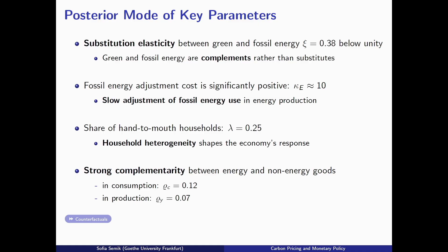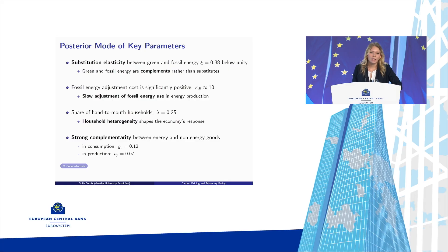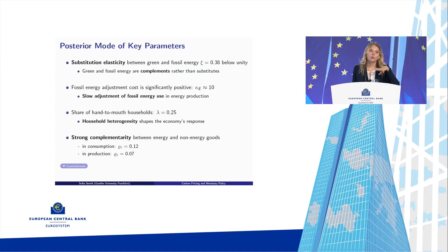As I mentioned, the substitution elasticity between green and fossil energy turns out to be very low from the estimation — significantly below unity, which is a bit non-standard. This is a product of the estimation being rather short-term, as in response to these transitory carbon price shocks, the estimation gives that these are very hard to substitute in the short term. In addition, I also get a significantly positive value for the fossil energy adjustment costs; the important thing is that the value is positive, accounting for the gradual dynamics seen in the local projections.